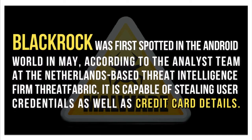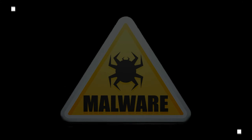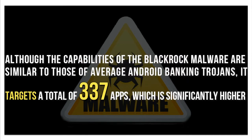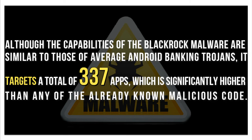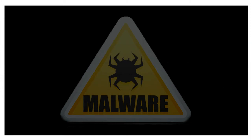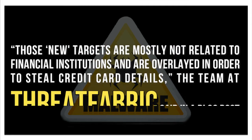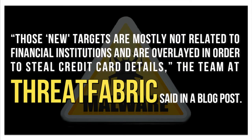BlackRock was first spotted in the Android world in May, according to the analyst team at the Netherlands-based threat intelligence firm ThreatFabric. It is capable of stealing user credentials as well as credit card details. Although its capabilities are similar to those of average Android banking trojans, it targets a total of 337 apps, which is significantly higher than any already known malicious code. Those new targets are mostly not related to financial institutions and are overlaid in order to steal credit card details, the team at ThreatFabric said in a blog post.